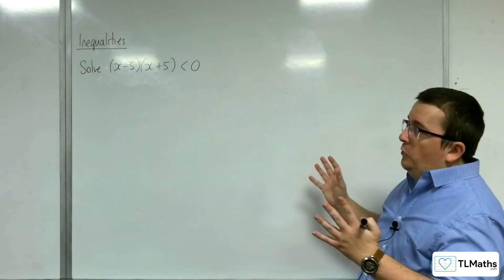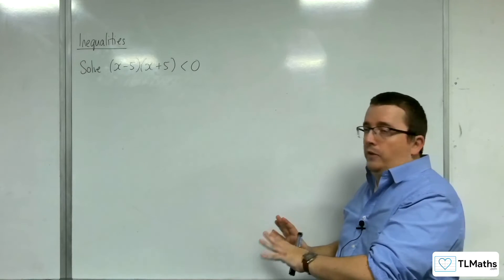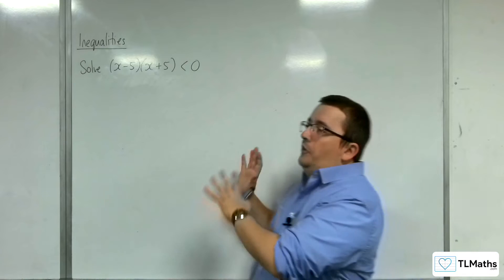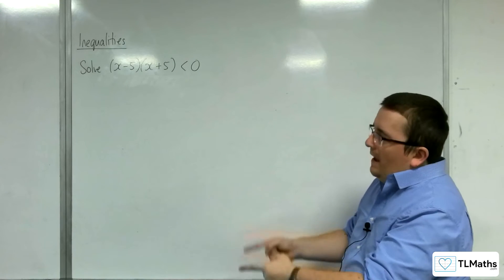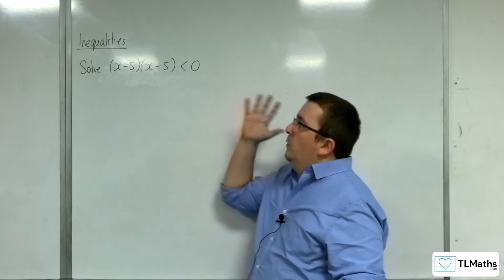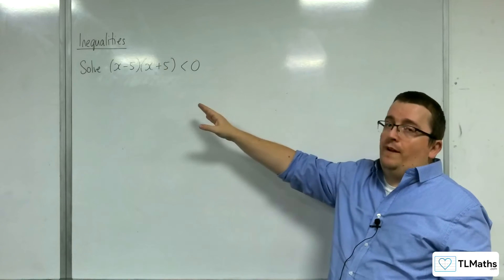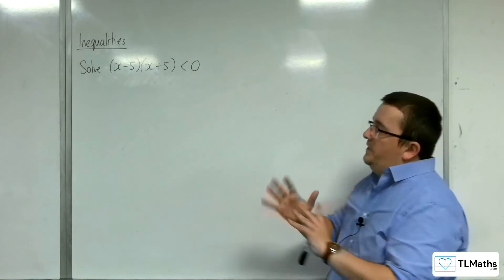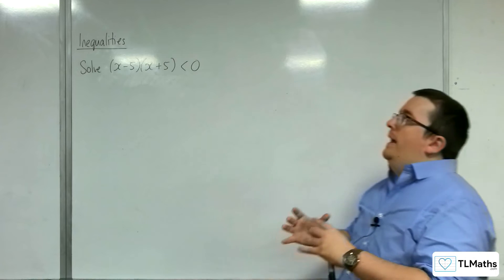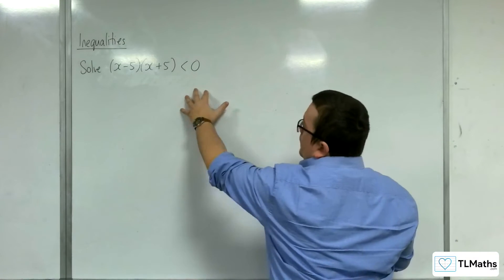First of all, I've got it into a setup where I've got zero on one side of my inequality, and I always try and get the zero on the right-hand side, and the algebra bit on the left. I've already got that set up, plus this quadratic has already been factorized. I've taken away all of the difficulty bits, and it's reduced to, can I solve this inequality?